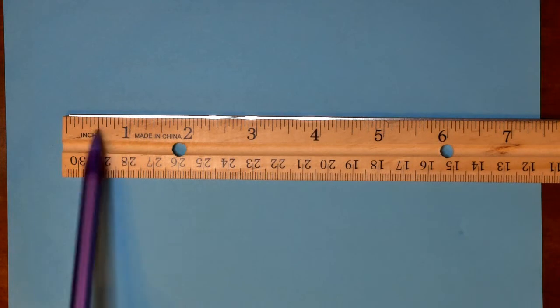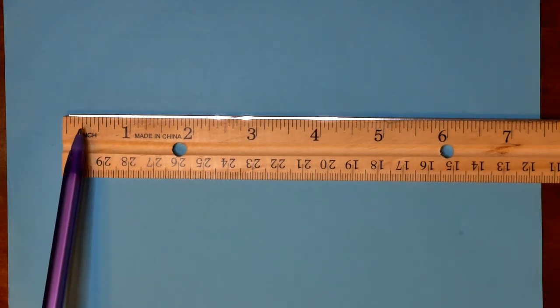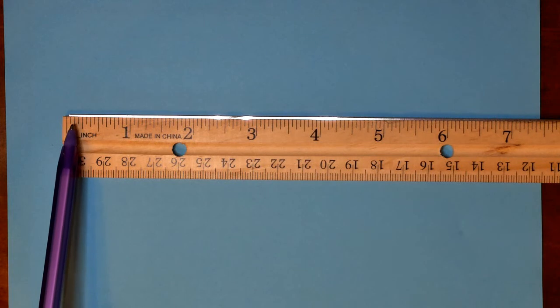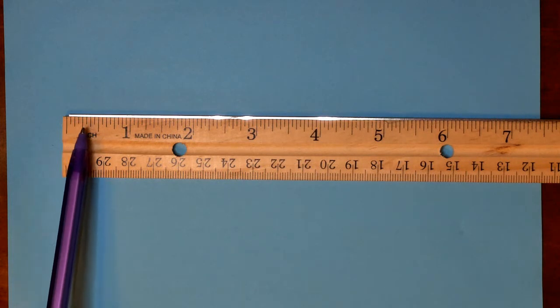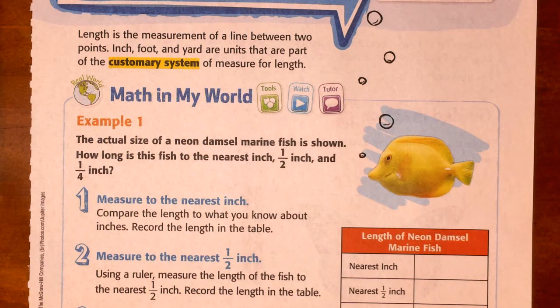So, we have a whole inch, we have a half of an inch, and then the smallest unit you guys will need to use is a quarter inch. These little lines in here are eighths and sixteenths, but you guys won't need to worry about those. Let's take a look at our lesson now that we've analyzed our ruler.